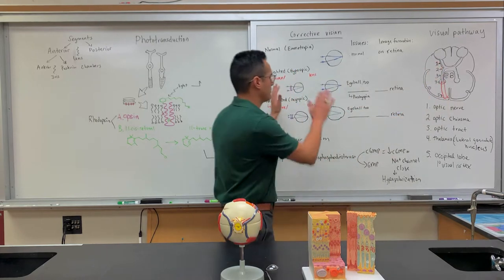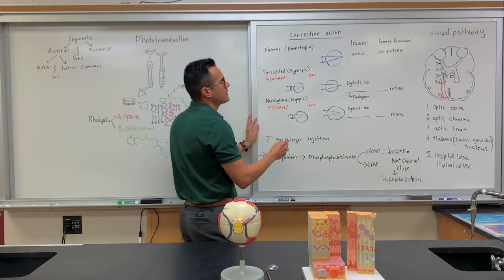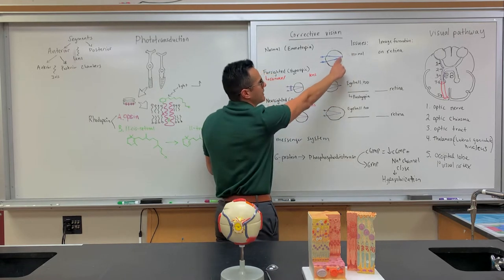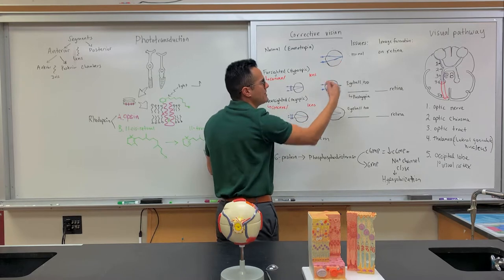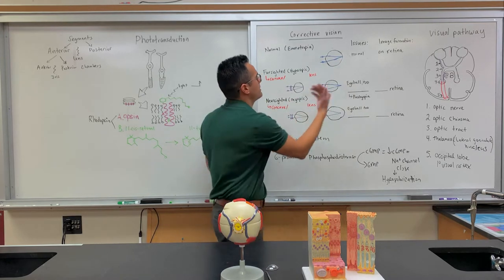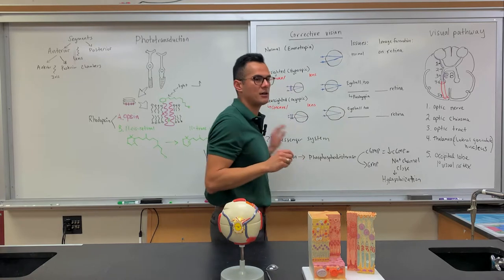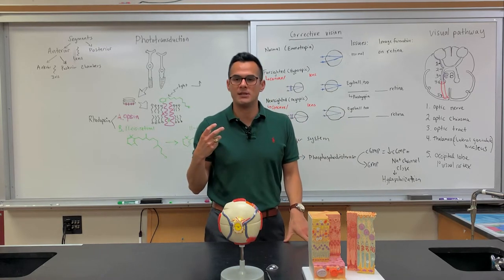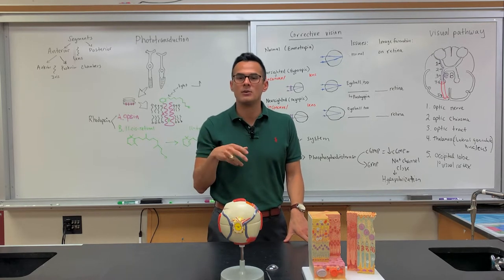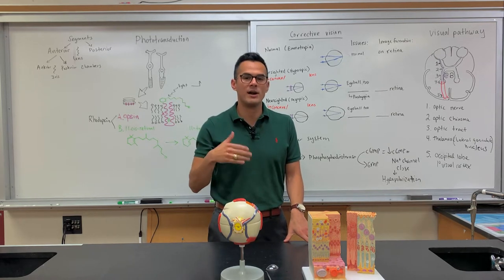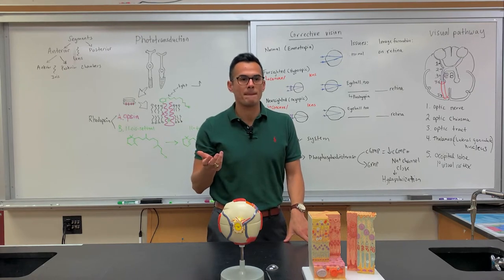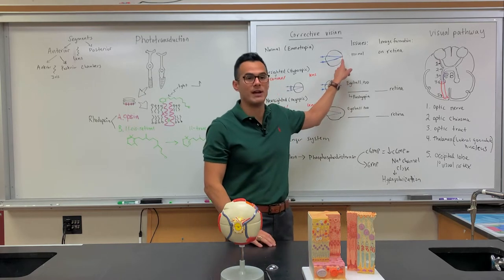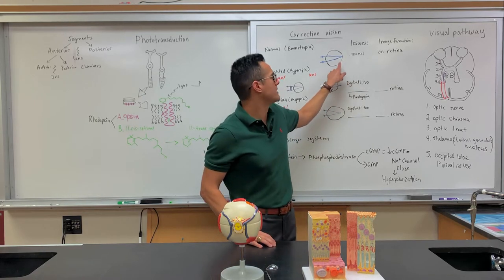We're going to talk about the visual pathway, but I'm still finishing corrective vision here. The light is going in and focused at this point because the light rays are converging, so we get a clear image. Because both of these lenses are convex or converging lenses — think of the letter E from the microscope — the image is going to be inverted. That's the image that forms on the back of the retina: a normally focused, inverted image.